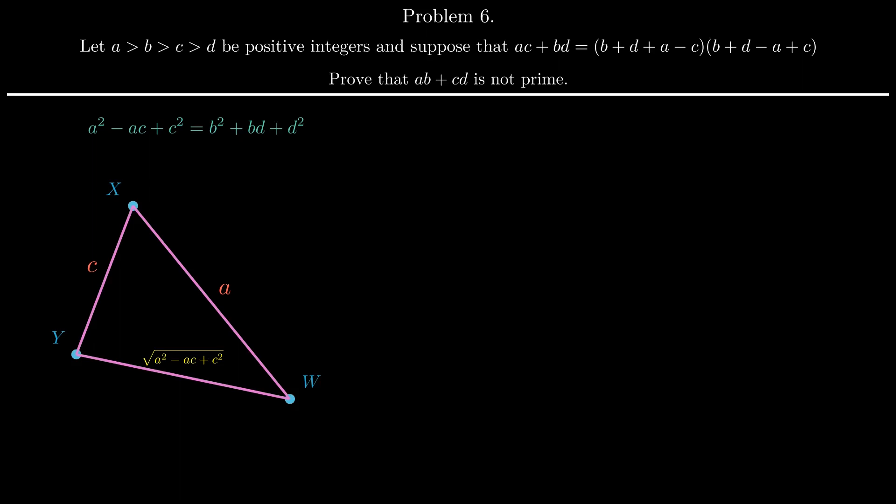Before you ask why we're doing this, let's verify that such a triangle even exists. To do this we'll need to check if the sides satisfy the triangle inequality, in particular if the two shorter sides add up to more than the longer side. In our case, a is the longest side, so we check that c plus square root of a squared minus ac plus c squared is greater than a.